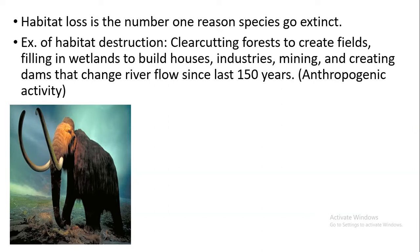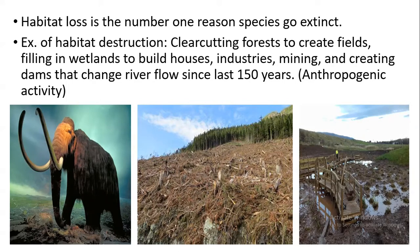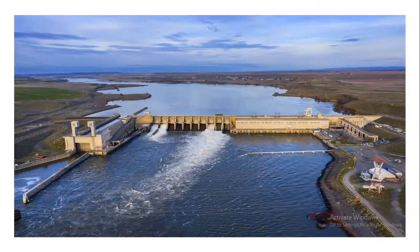Deforestation causes habitat destruction. The cutting down of forests is taking place so that we can create fields for agriculture. Even the filling in of wetlands is used to build houses, industries, mining, and creating dams. Dams are also one of the main reasons for changes in the direction of rivers. Since 150 years, habitat destruction has been taking place, majorly due to anthropogenic, that is, human activities.